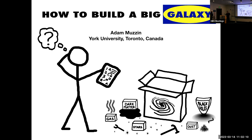It's a pleasure to introduce Professor Adam Muzzin, who's here giving our colloquium today. Adam got his PhD from the University of Toronto and held postdoc positions at Yale and Leiden, was a Kavli fellow at Cambridge, before moving on to York University where he's a professor. He's going to be telling us about how to build a big galaxy with IKEA tools and equipment.